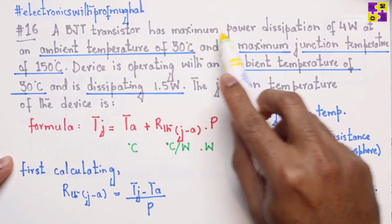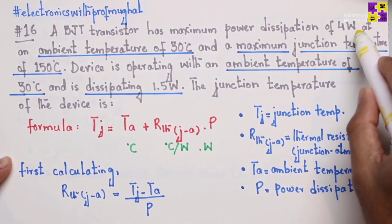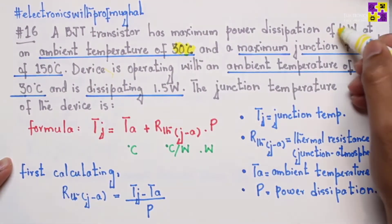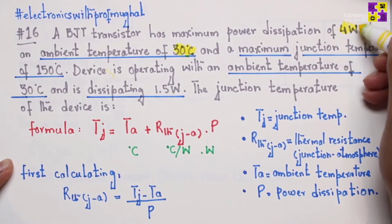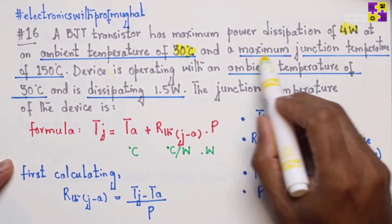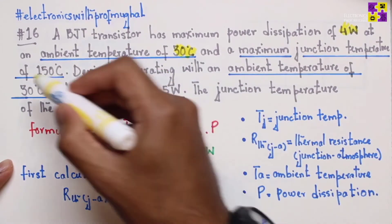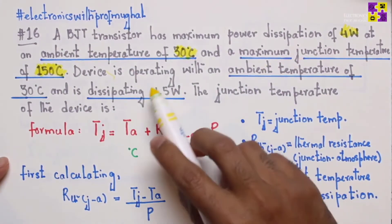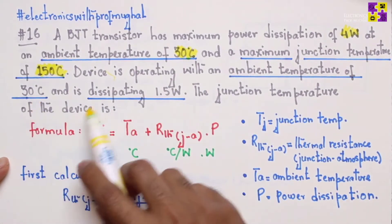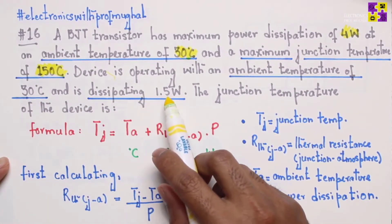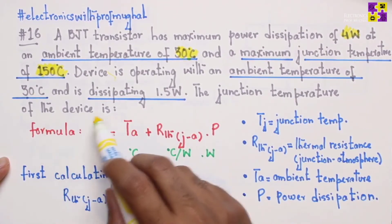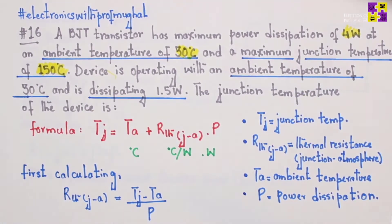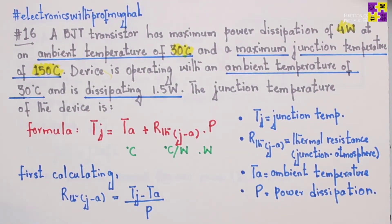A BJT transistor has a maximum power dissipation of 4 watts at an ambient temperature of 30 degrees centigrade and a maximum junction temperature of 150 degrees centigrade. The device is operating at an ambient temperature of 30 degrees centigrade and is dissipating 1.5 watts. We need to calculate the junction temperature of the device.